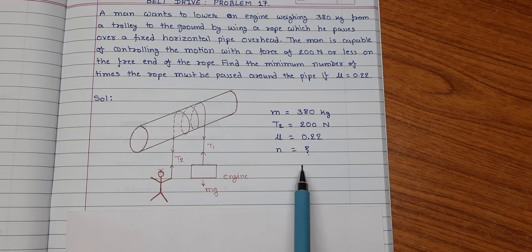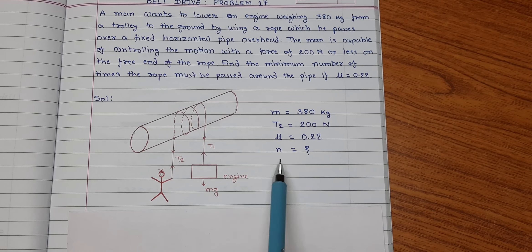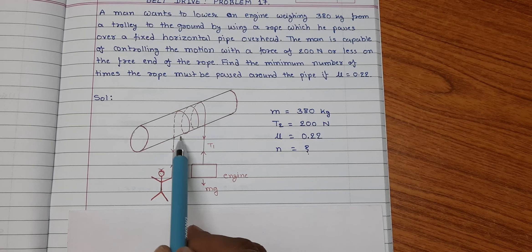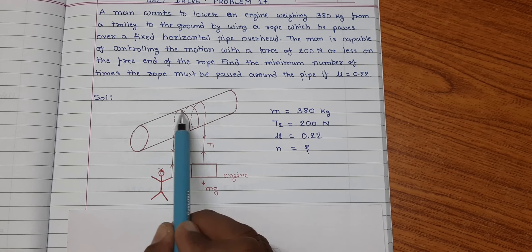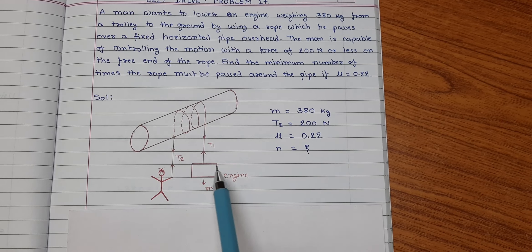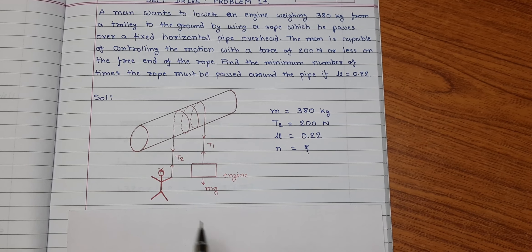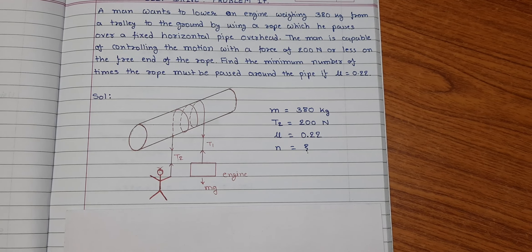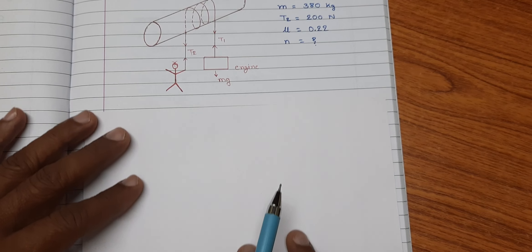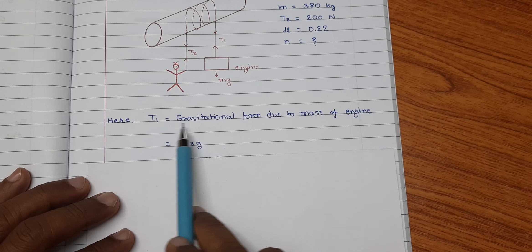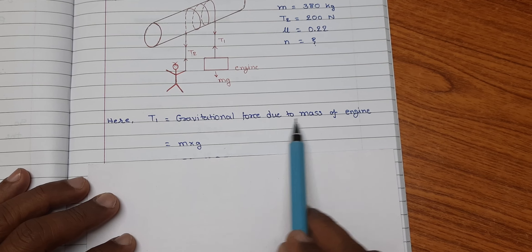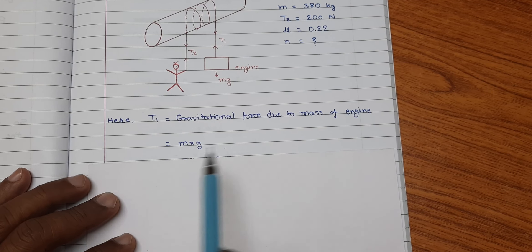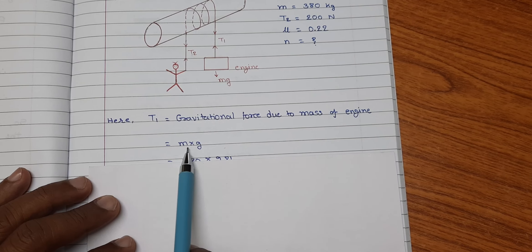We have to find out the minimum number of turns which the rope should pass over the pipe. So, the number of passes N is to be calculated. Here T1 is equal to gravitational force due to mass of engine that is equal to M into G.